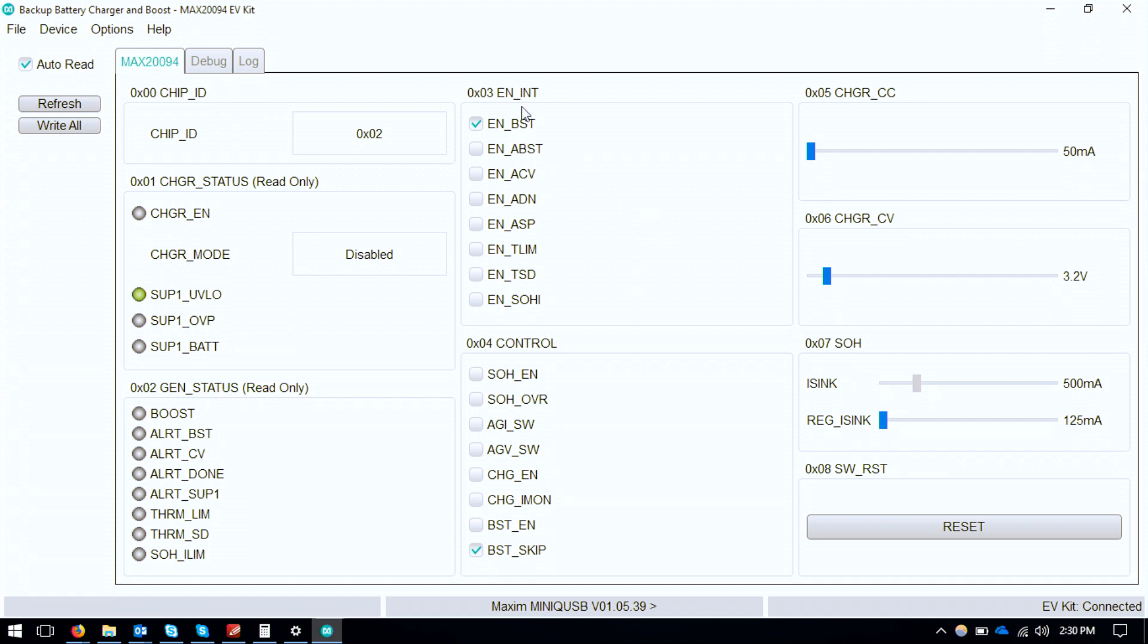Okay and then everything is enabled. The charger right now is disabled as you see on the status here. And now we'll hit charge enable in the fourth register.